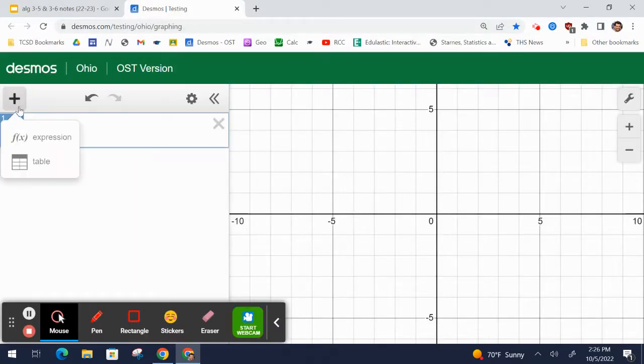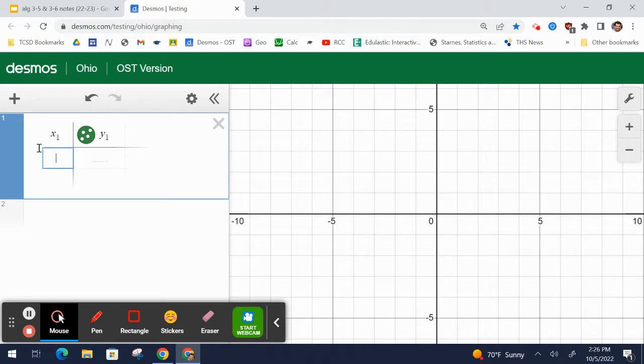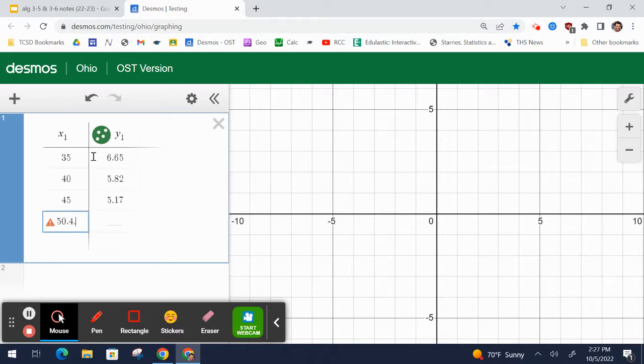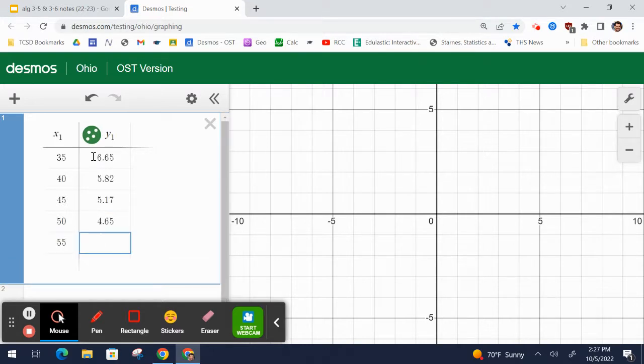I'm going to leave this slide and we're going to get the equation of our line. So let me go to Desmos. I'm going to click add a table and I'm going to start typing in my data. So 35, if you use the tab key, it goes to the Y value to put the corresponding Y value. Notice above here, I have X1 and Y1. That's what you want. 40 and 5.82, 45 and 5.17, 50 and 4.65, 55 and 4.23, and 60 and 3.88. I have my data in.